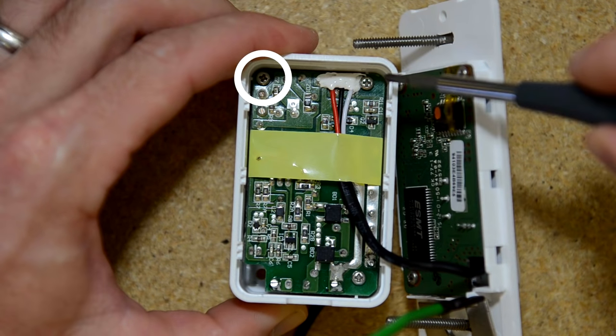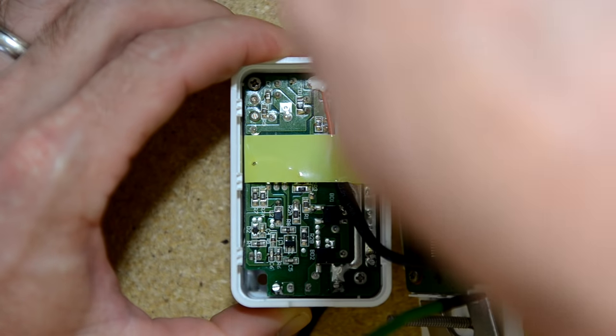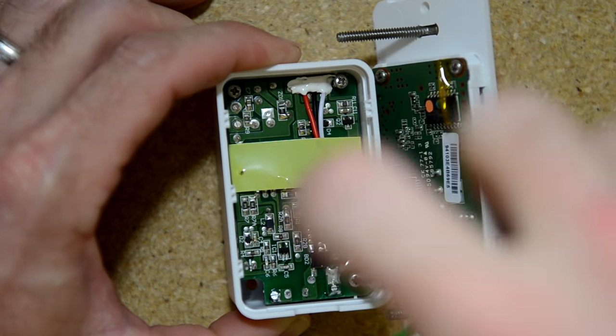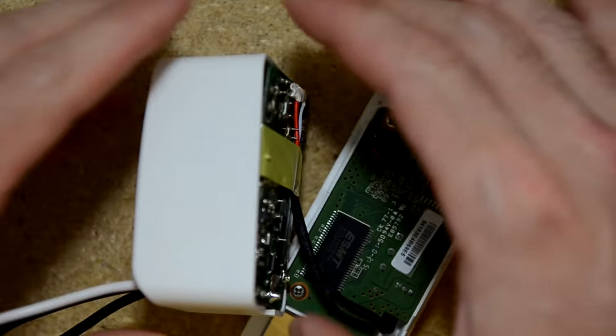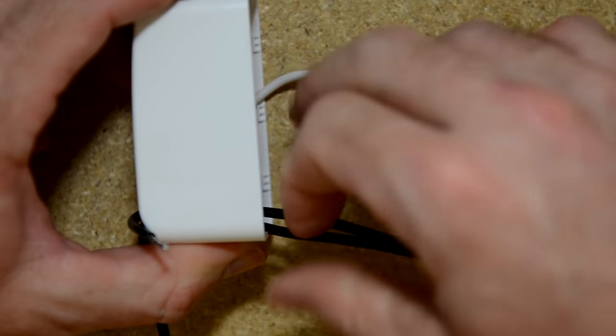There are three screws. Remove these and put them in a safe place. Remove the board by pulling on it and pushing the wires through. Takes a little doing.